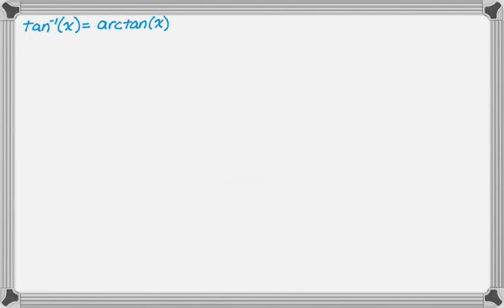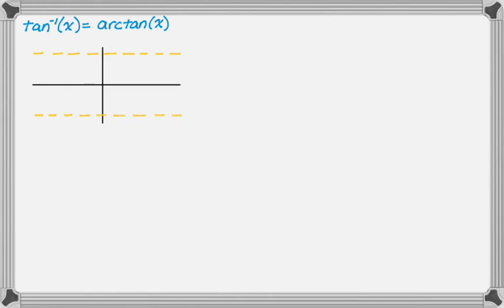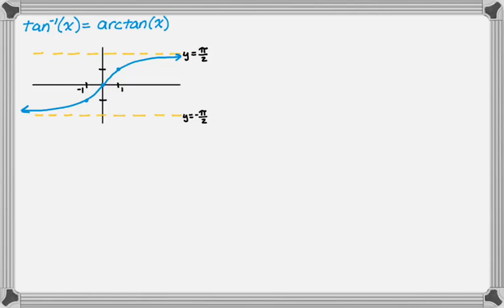Now let's do arc tangent — inverse tangent and arc tangent are interchangeable. This is the most useful of the inverse trig graphs; you'll refer back to it in calculus when you talk about limits, because the horizontal asymptotes become very important. I'll draw in two dotted horizontal lines: these are asymptotes at y equals pi over 2 and y equals negative pi over 2. On the x-axis, just put negative 1 and 1. There are three key points, then sketch in the curve — it's a smooth curve, kind of like a cubic on its side.